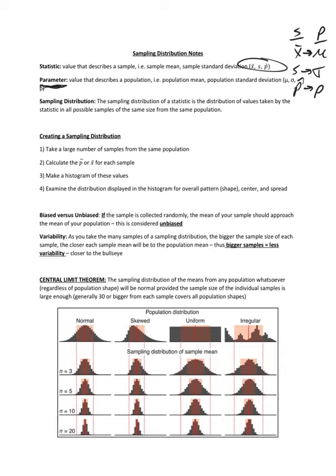Sampling distribution, by definition, is the distribution of a statistic — the distribution of values taken by the statistic in all possible samples of the same size from the same population. This is not something you'd do by hand. In our school of about 3,400 students, samples of size 30 would produce millions upon millions of combinations. What we can do is understand the statistics behind what we'd be accomplishing if we took a large number of samples.